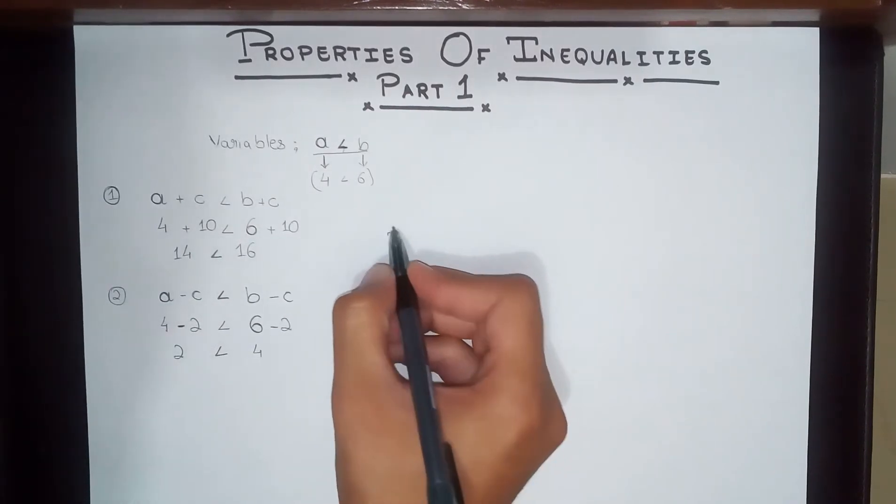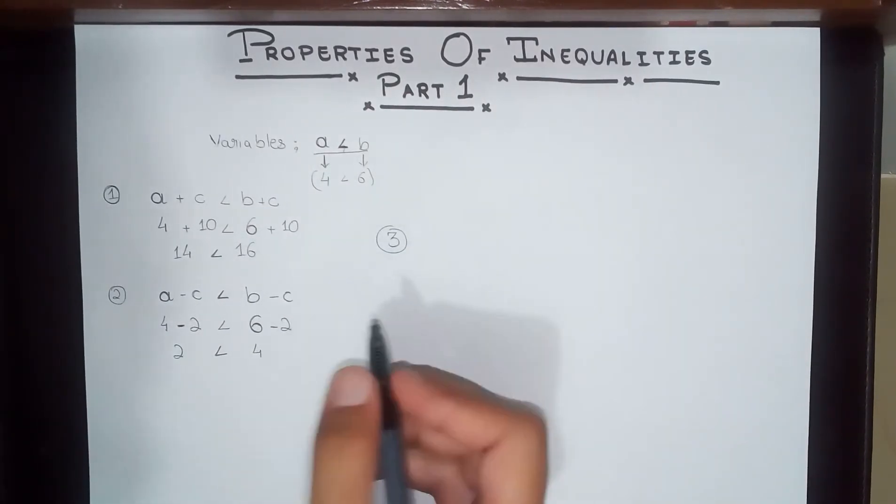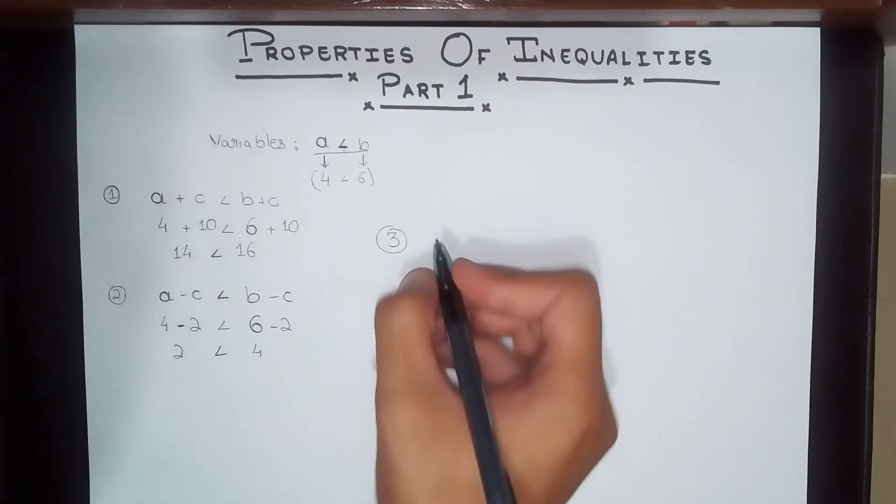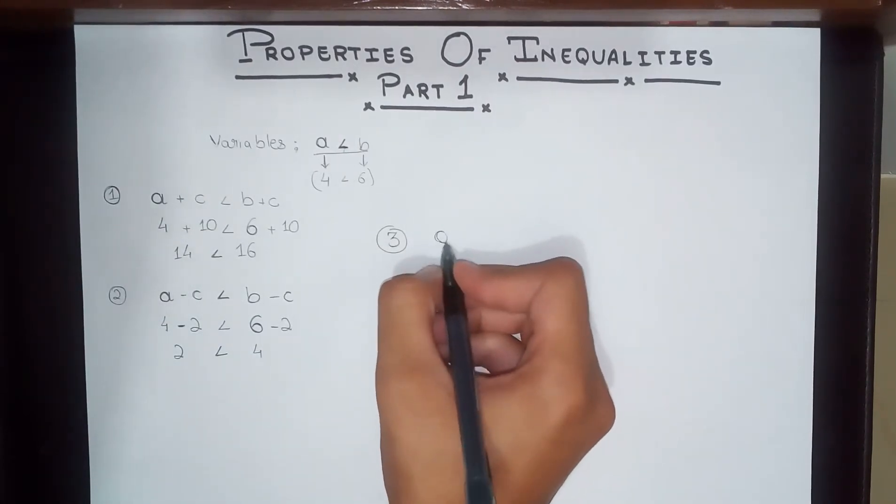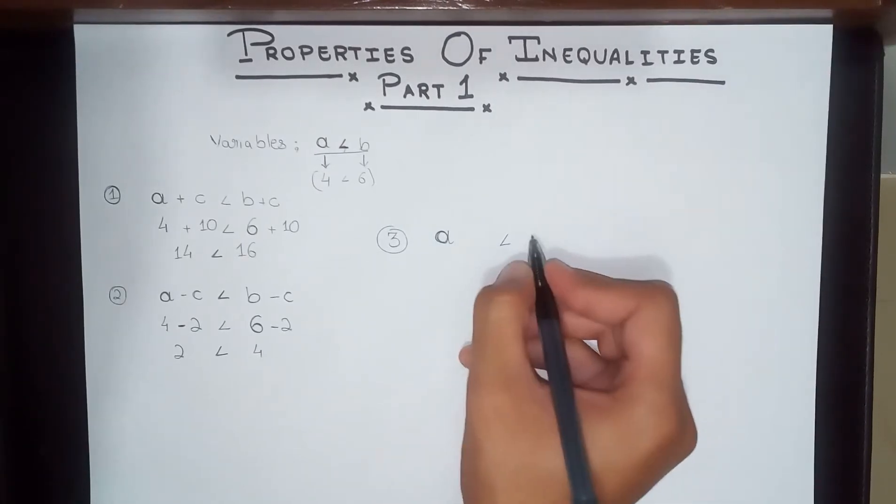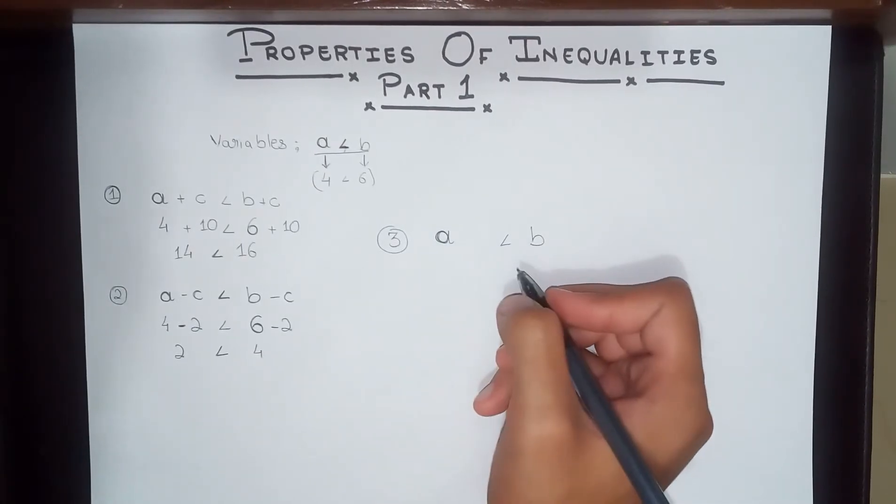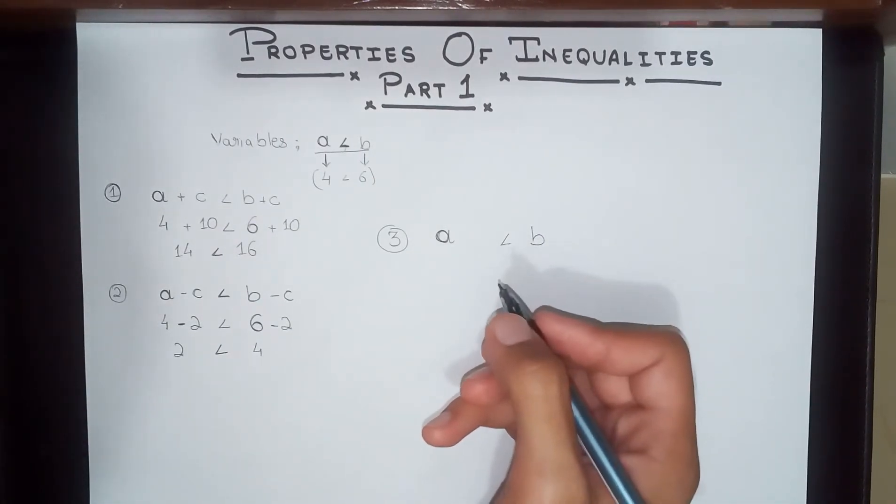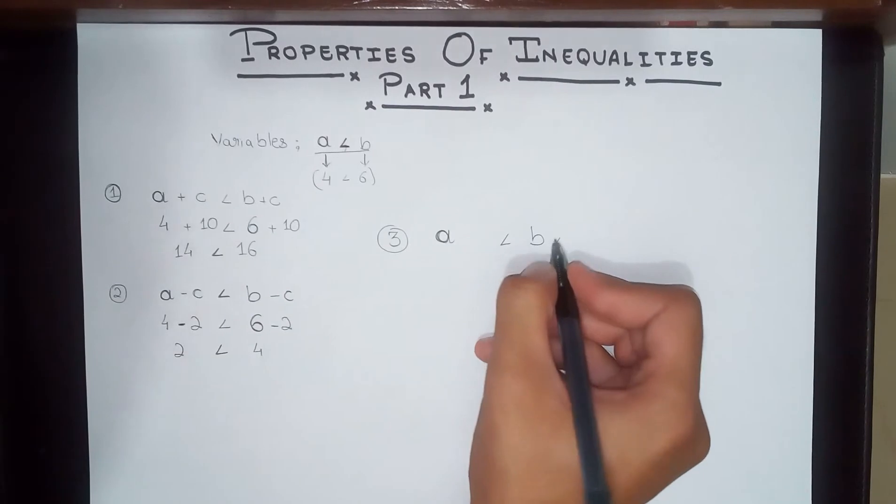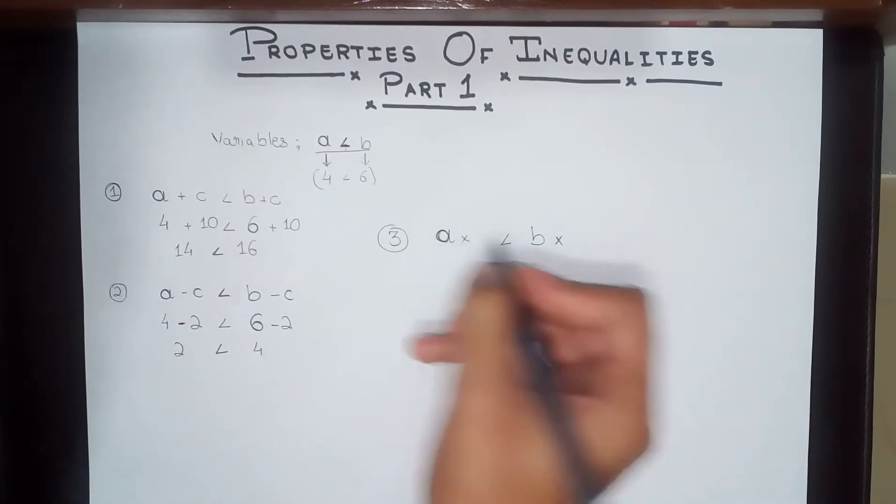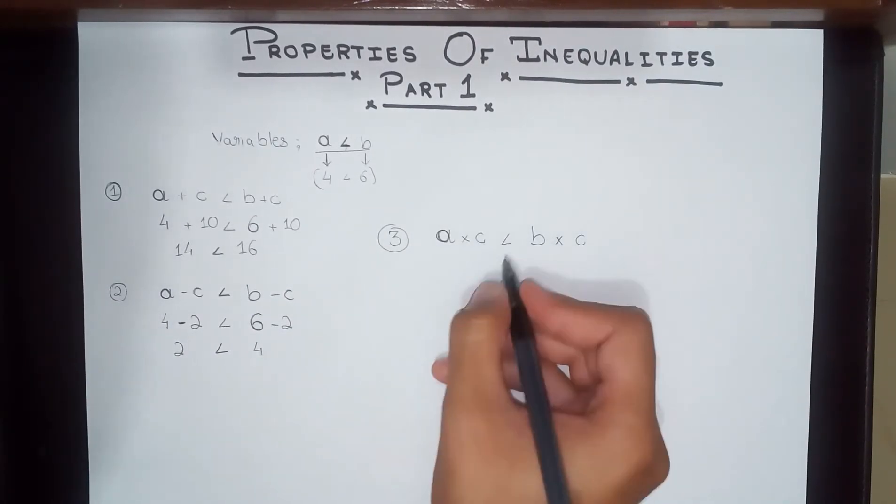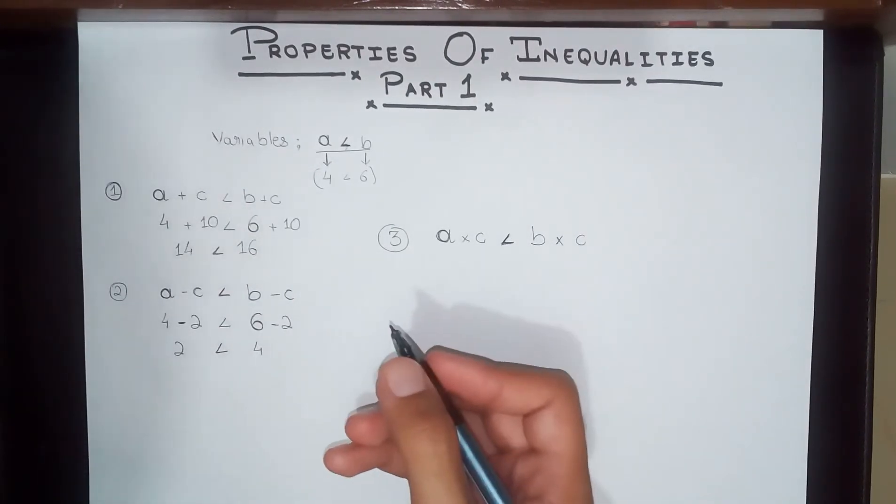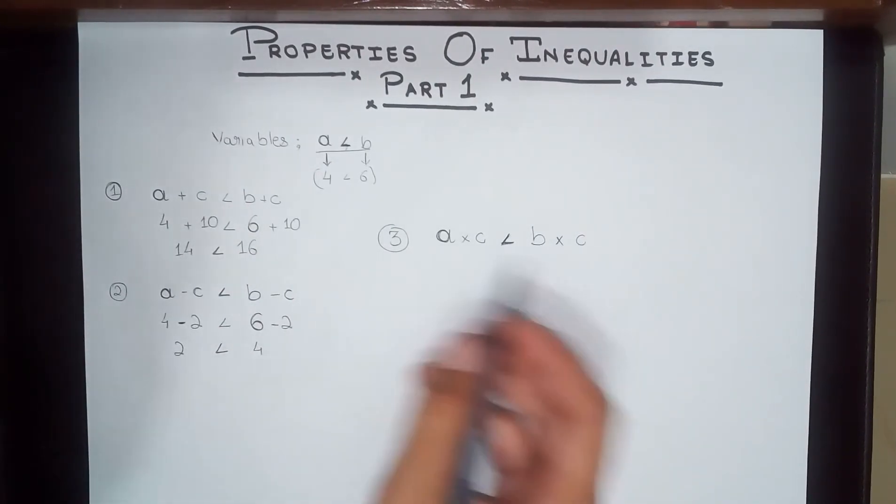Let's get on with the third property. We have a number A and a number B. When you multiply the same number to both sides, the inequality remains the same. A into C is less than B multiplied by C.